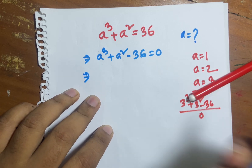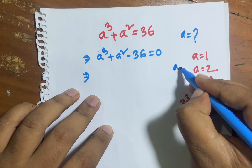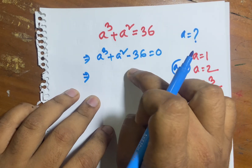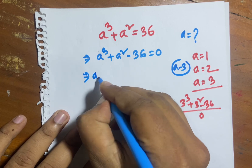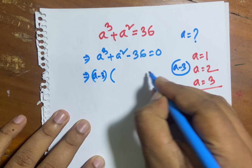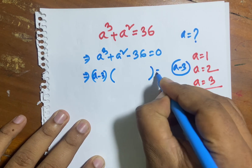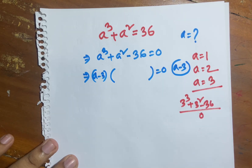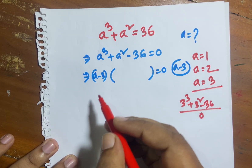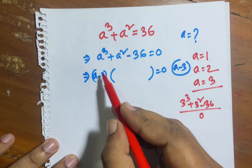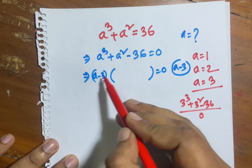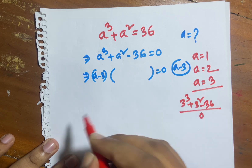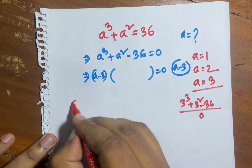So we can say easily that (a minus 3) is one factor of this equation. We don't know the other factor yet, so now I find it out. I divide this equation by (a minus 3) to find the remaining term.